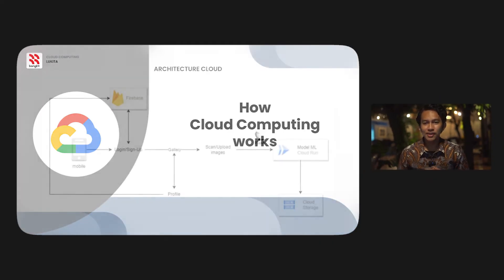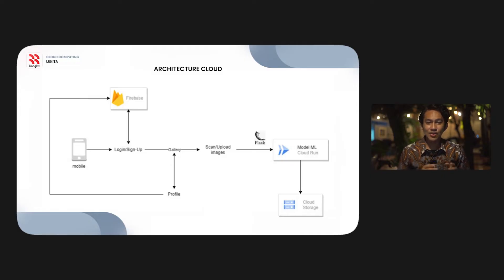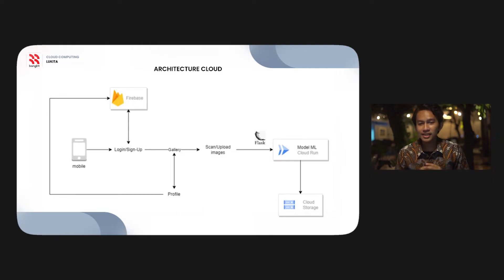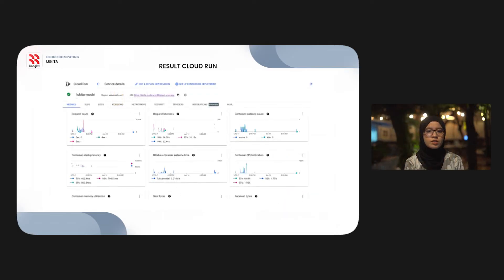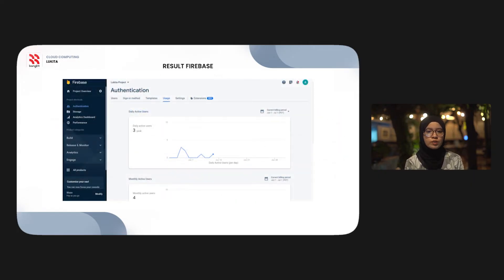Cloud computing serves as a critical backbone for the LUKITA application, enabling a wide array of features and a seamless user experience. In the architecture: on mobile, users can log in or sign up using Firebase Authentication. They can scan or upload images, which are processed by the machine learning model deployed on Google Cloud Run. Similar image results are retrieved from Google Cloud Storage. The dataset images are also saved in Cloud Storage.